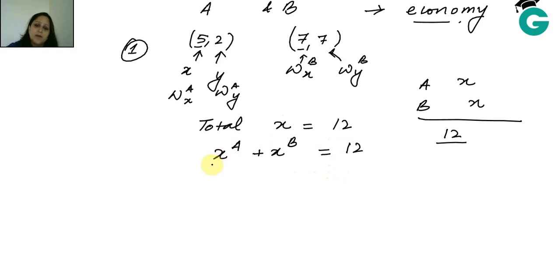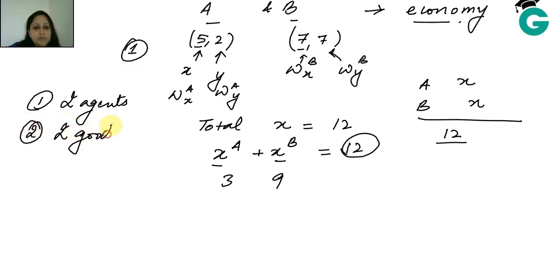Whatever is the consumption of x by A and whatever is the consumption of x by B, it has to be equal to 12. It can be less than - they can throw away some x - but ideally we don't allow that in the economy. The idea is that it can't be greater than that. So if A is consuming 3 units of good x, then B is consuming the rest.